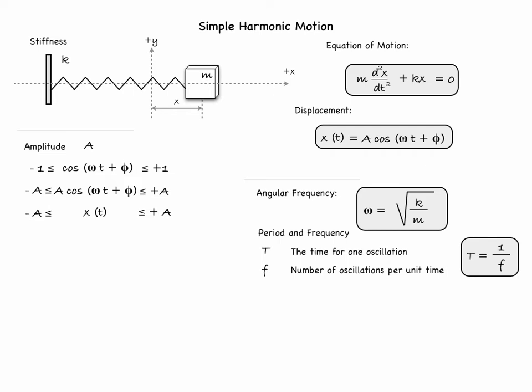The period of oscillations is defined as the time for one oscillation, while the frequency is defined as the number of oscillations per unit time. By virtue of their definitions, the period is always equal to 1 over the frequency. Let's examine the displacement at two instants separated by a time interval equal to one period, here marked as capital T.